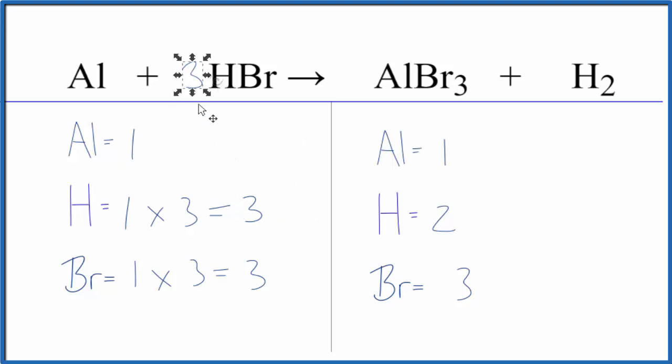Instead of three, we'll put six. And then we need to update these numbers here. So we have one times six, six hydrogens, one times six, six bromine atoms. I think we can do that, though.